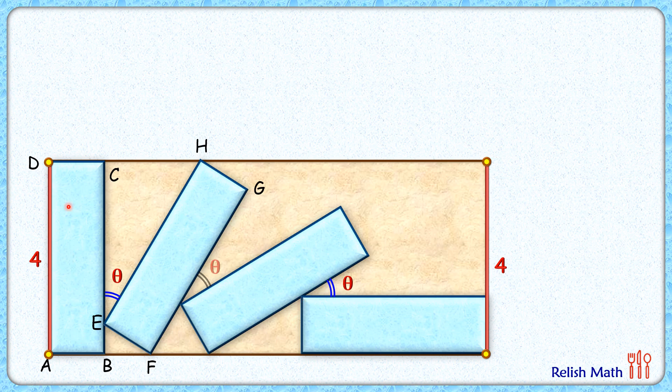If you can imagine, this vertical rectangle has actually rotated by 90 degrees to come to horizontal position. So we can say the sum of these three angles, theta plus theta plus theta, is 90 degrees, or each angle is 30 degrees.